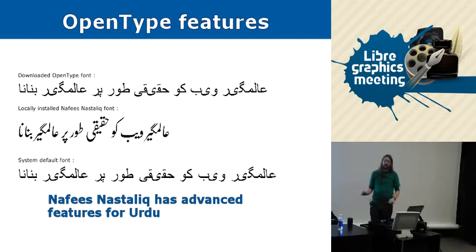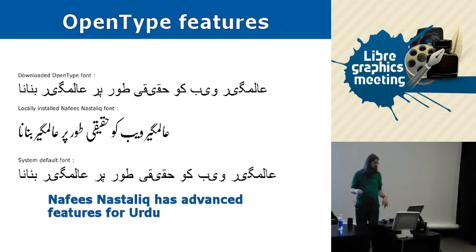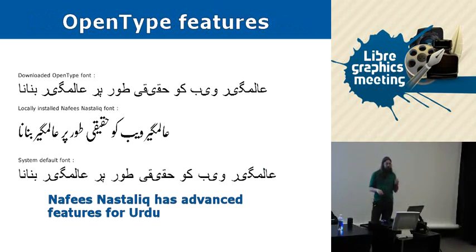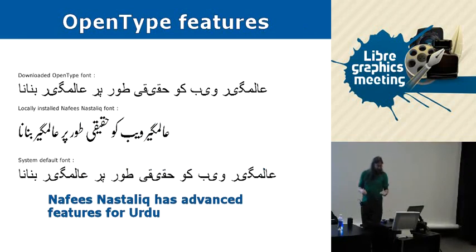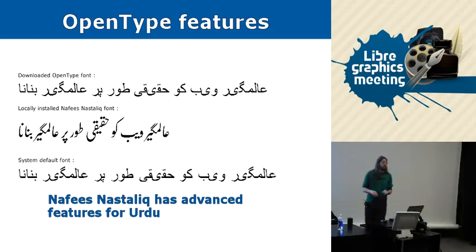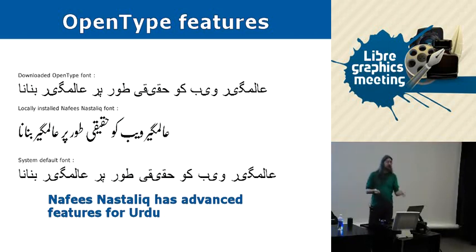Here's another example. The bottom line is text in Urdu using the system's default font for Arabic. The middle line uses a font called Nafis Nastaliq, which I have installed, and which has special OpenType features allowing correct Urdu typography — and it looks quite a bit nicer. The top line is actually trying to download a font off the web and failing — I'll explain why later.